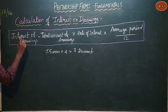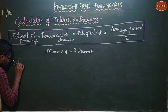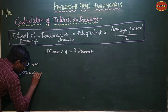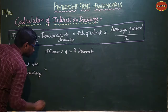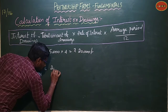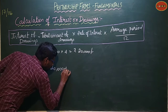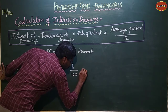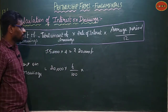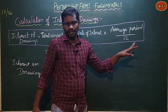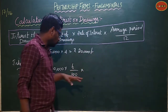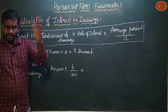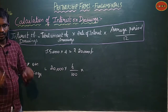Now we calculate interest on drawings. Interest on drawings equals amount of drawings into rate of interest. Rate of interest is 6%, so we use 6 divided by 100. Now for the average period: this is a quarterly question, and Kevin withdraws at the end of each quarter.